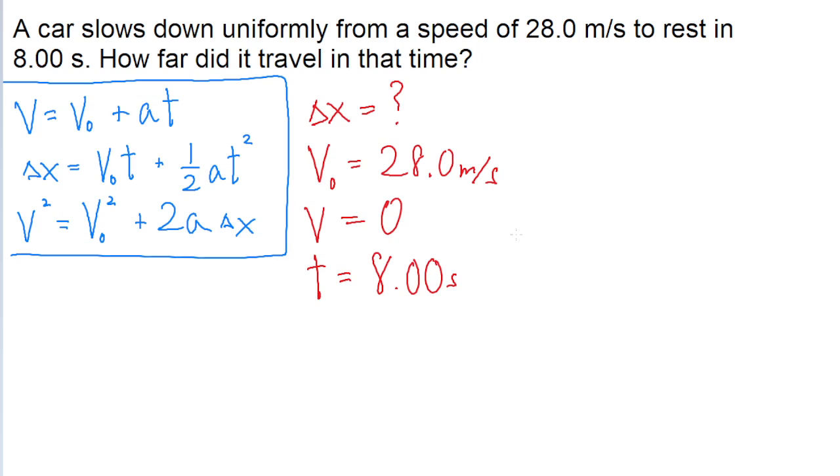Now ideally, this is the part where we find the equation that has all four of these variables. But if we look at the three equations I've written on the left, we can see that none of these equations have all four of these variables. Even though the three equations I wrote are kind of like the big three that you can always use in any problem, it's not always a one-step process.